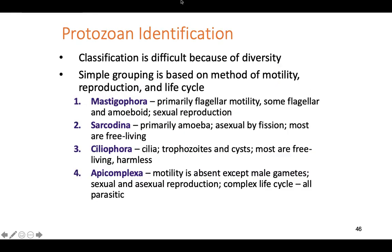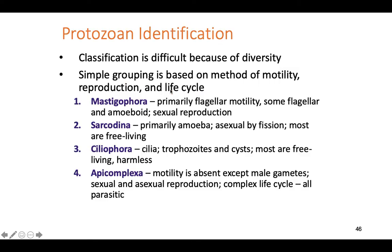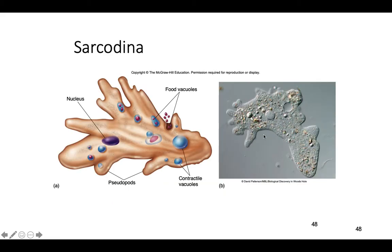The first group is Mastigophora — these guys usually move by a flagella, some do amoeboid movement, and they are capable of sexual reproduction. Giardia lamblia is an example — you can see the flagella. The next group is Sarcodina — primarily amoeba, mostly amoeboid movement, asexual reproduction, and mostly free-living in the environment. You can see the little pseudopods poking out — that's how this guy moves. He sends his little pseudopodia out, then oozes towards them, engulfing food by surrounding it with his pseudopod.